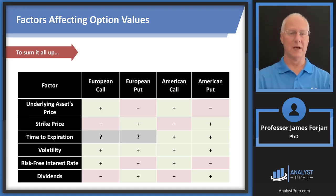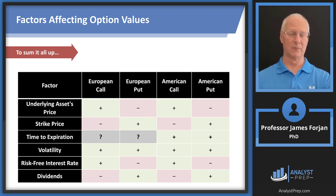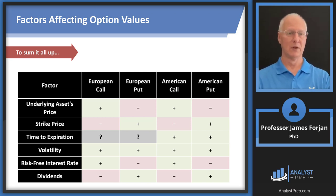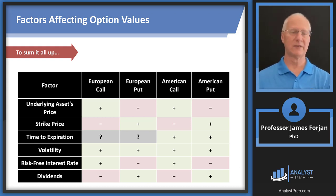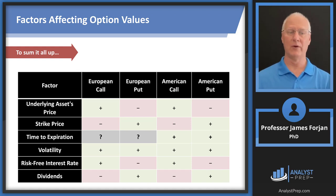Here's the slide summarizing all six factors — get your phone out and take a picture. I can't imagine GARP would put together an exam without asking multiple questions here. Think about my example of a $100 stock price and $100 exercise price, then figure out what happens to the call and the put when each of the six factors changes. Make sure you read the question stem to determine whether the option is European or American.